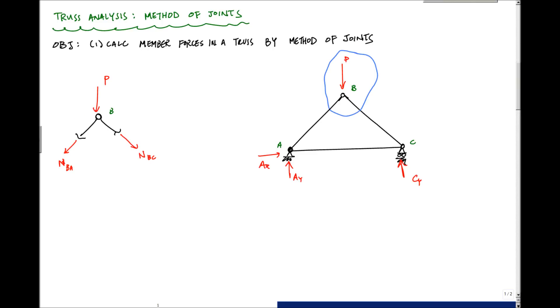But in this case, whenever I isolate a joint using the method of joints, because all my forces act through one point, I can't use the moment equation for one of my equilibrium equations. So I only have two equilibrium equations at each joint. And that would be sum of the forces in the X equal to zero, sum of the forces in the Y equal to zero.